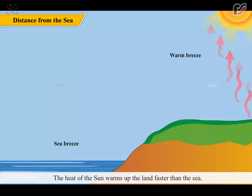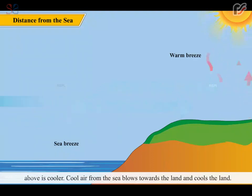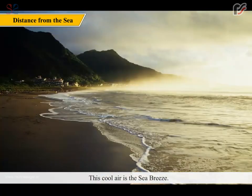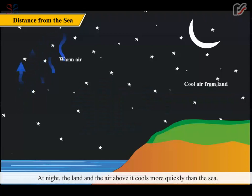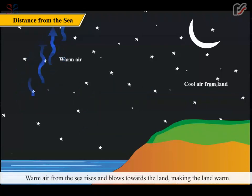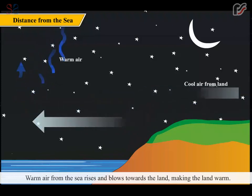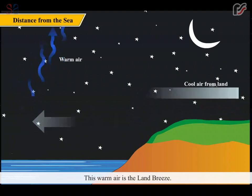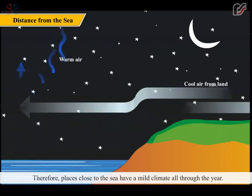The heat of the sun warms up the land faster than the sea. During the day, the land and the air above it get heated and rise up, but the sea and the air above it is cooler. Cool air from the sea blows towards the land and cools the land — this cool air is the sea breeze. At night, the land and the air above it cools more quickly than the sea. Warm air from the sea rises and blows towards the land making the land warm — this warm air is the land breeze. Therefore, places close to the sea have a mild climate all through the year.